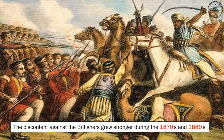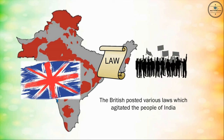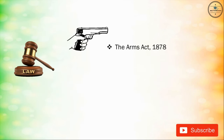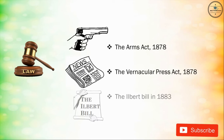The discontent against the British grew stronger during the 1870s and 1880s. The British passed various laws which agitated the people of India. These were the Arms Act 1878, the Vernacular Press Act 1878, and the Ilbert Bill in 1883.